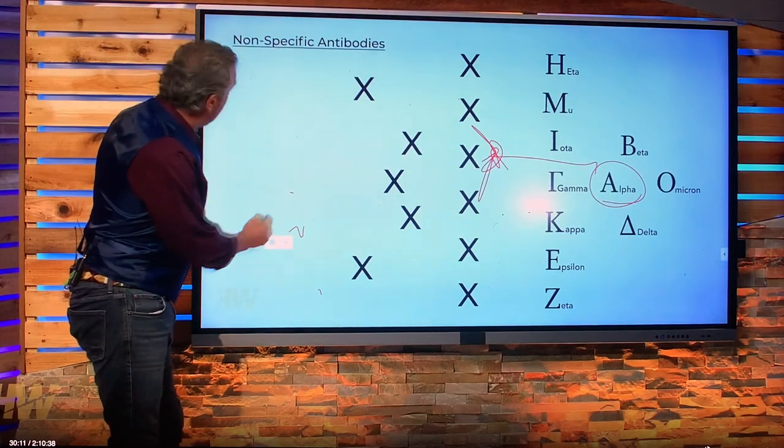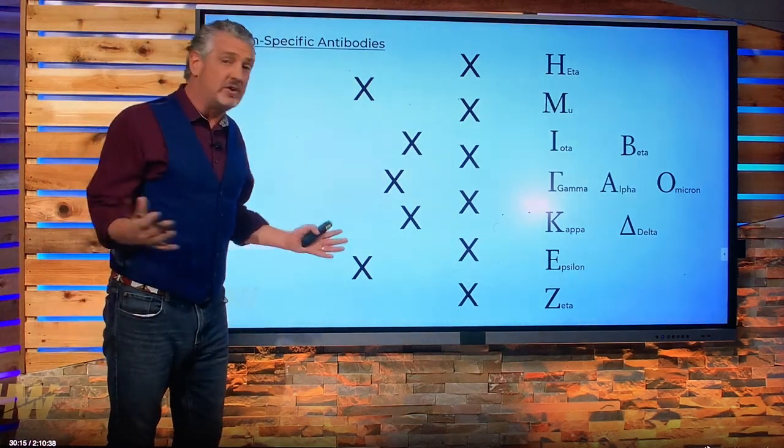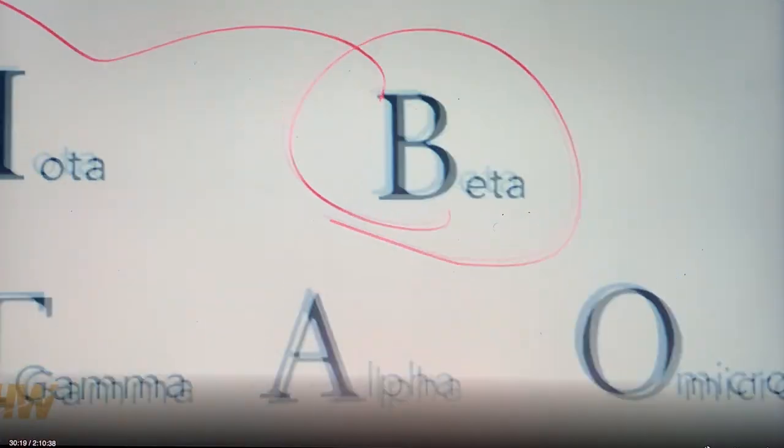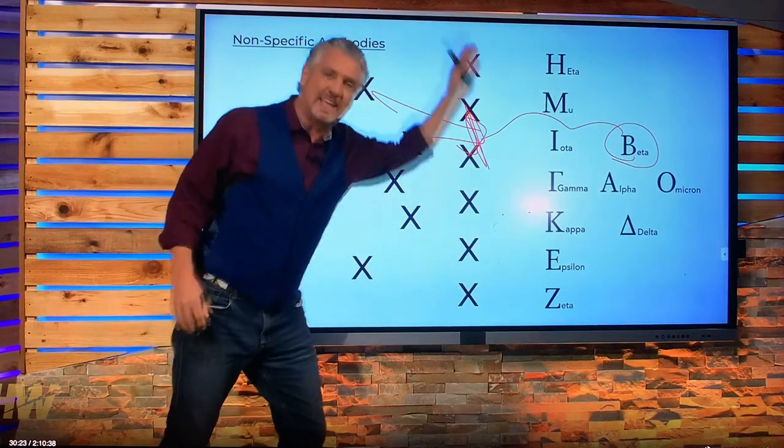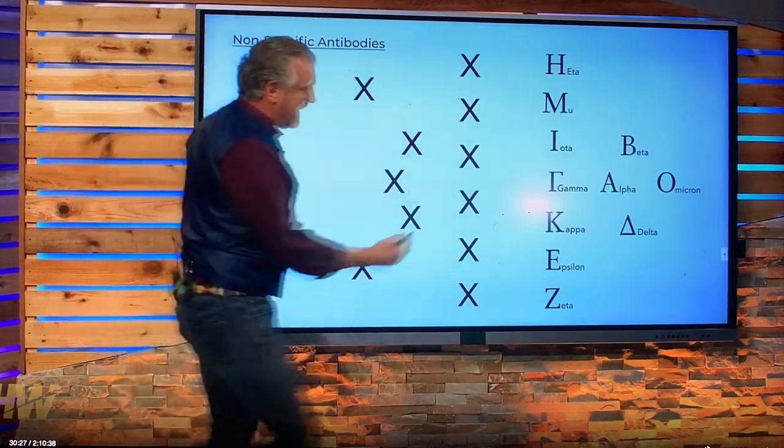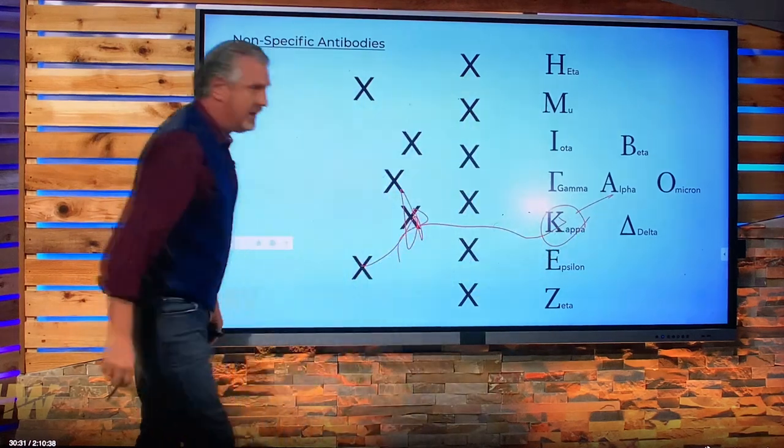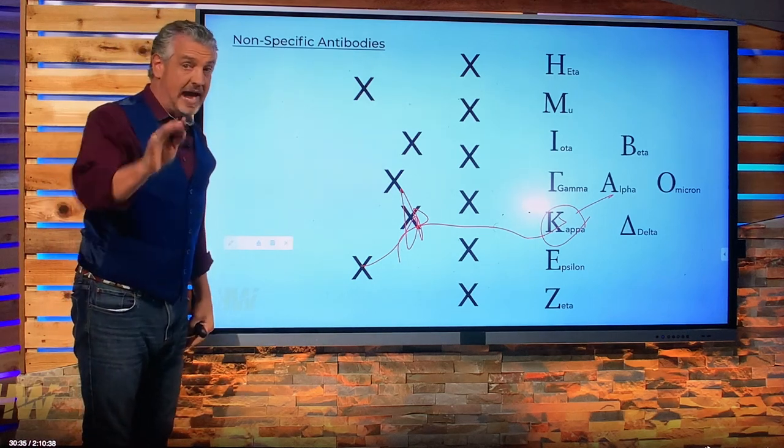But the beauty of the innate nonspecific antibodies is that they don't care if it's alpha or if somebody else gets it. So beta could get it. Beta gets the ball, tries to get through. Boom. They come in from all sides. The nonspecific recognize anyone on that team. They could do a trick play with kappa. It doesn't matter. Boom. Kappa goes down because of nonspecific antibodies.